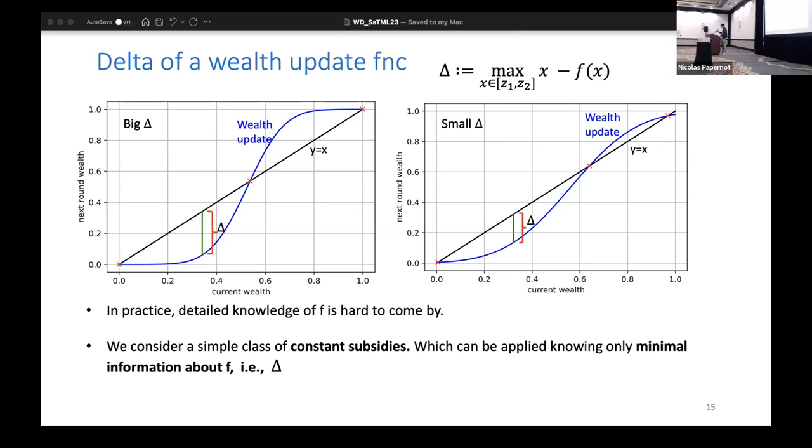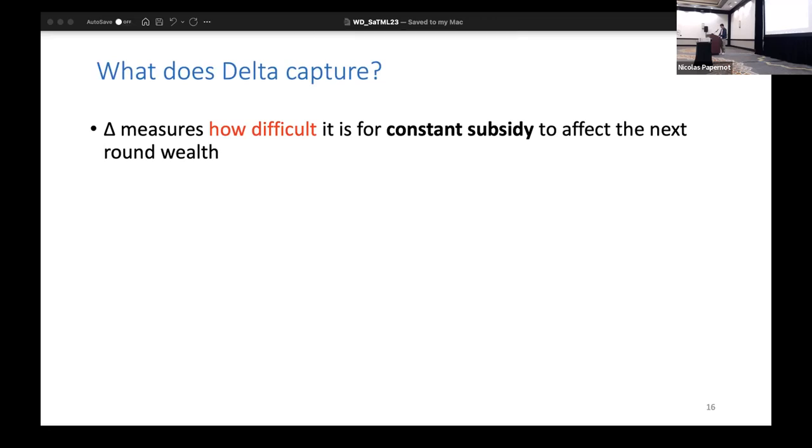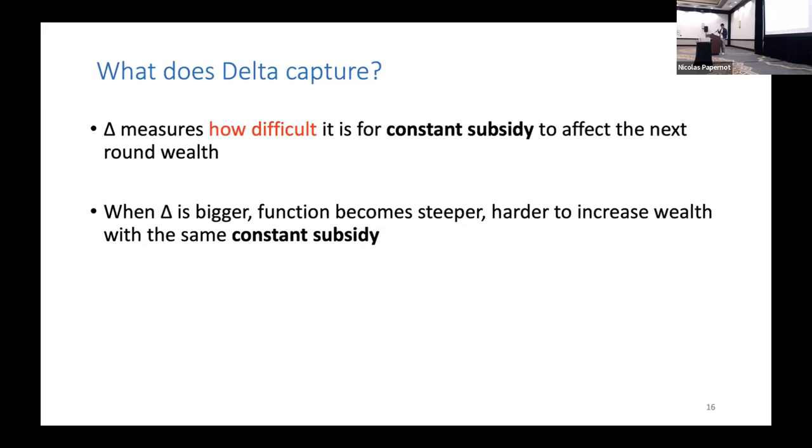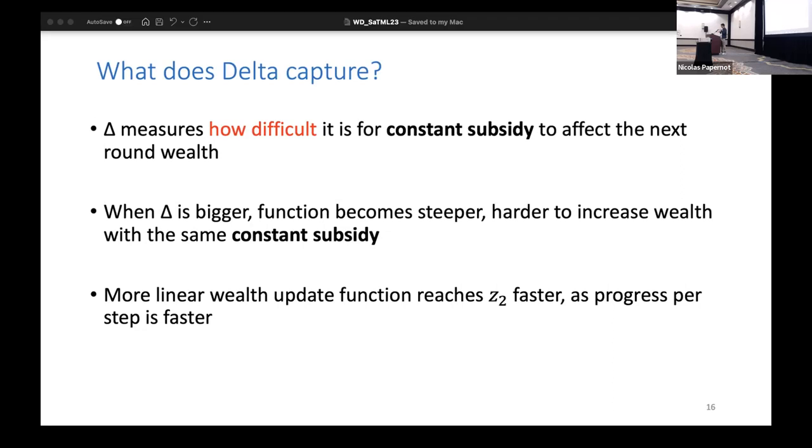To do this, you need to know some minimal information δ, and this δ is the maximum of x minus f(x) in the lower attractive region. I've just made two plots of high δ and small δ; this is the L∞ norm. What does this δ capture? It captures how difficult it is for a constant subsidy to affect the next round's wealth. When you have a big δ, for the same plus c subsidy, you increase slower. When you have a smaller delta, you have a more linear function with a small δ, so you reach z₂ faster with the subsidies.